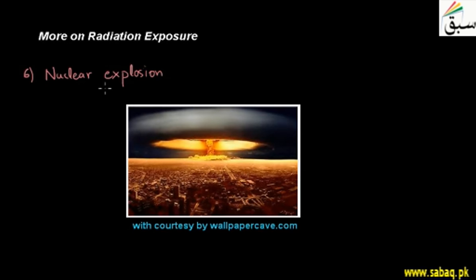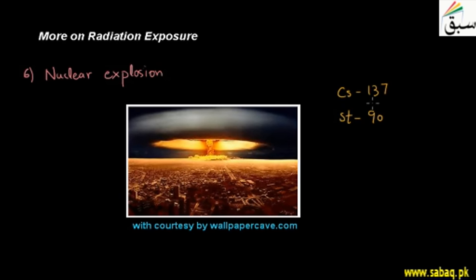Students, when there is a nuclear explosion, in its results there are many missing elements, such as cesium-137 and strontium-90. These numbers show the atomic mass — the number of neutrons plus the number of protons.